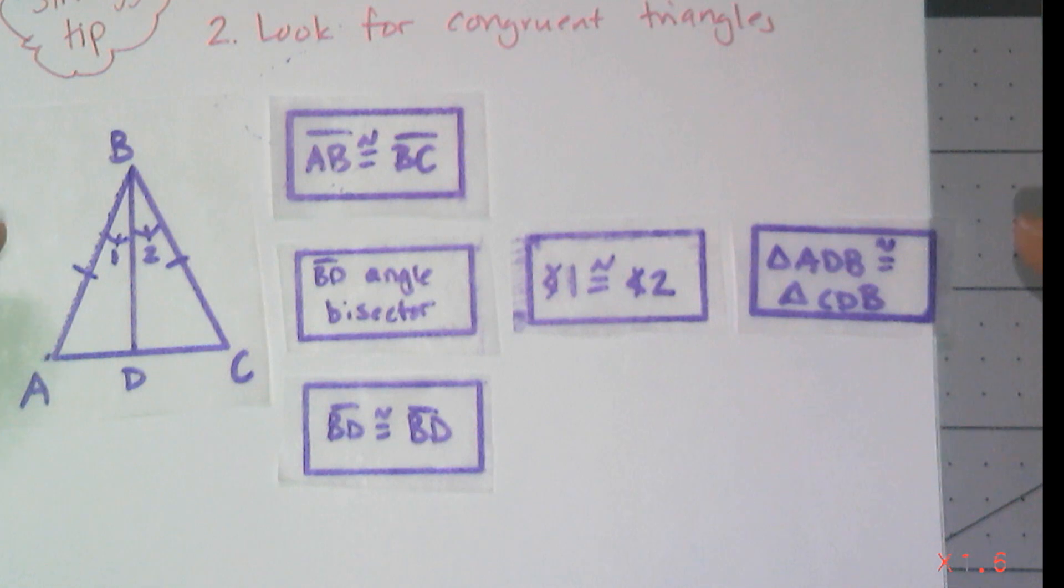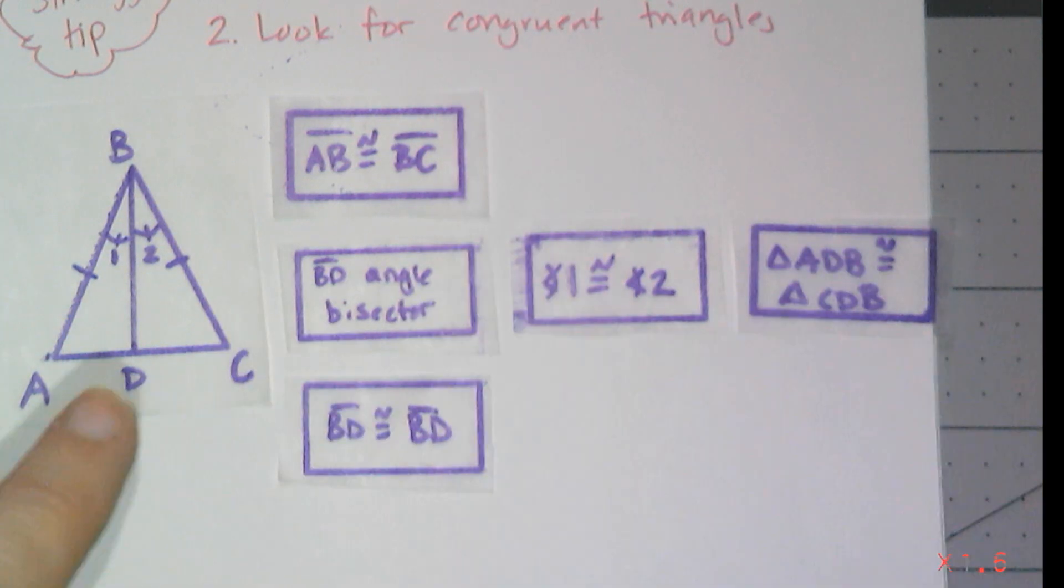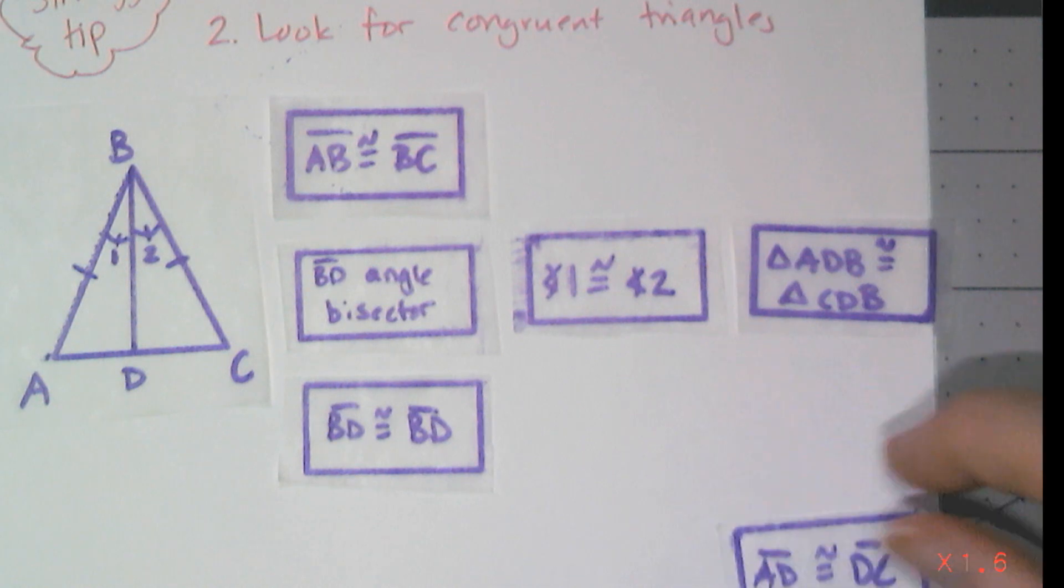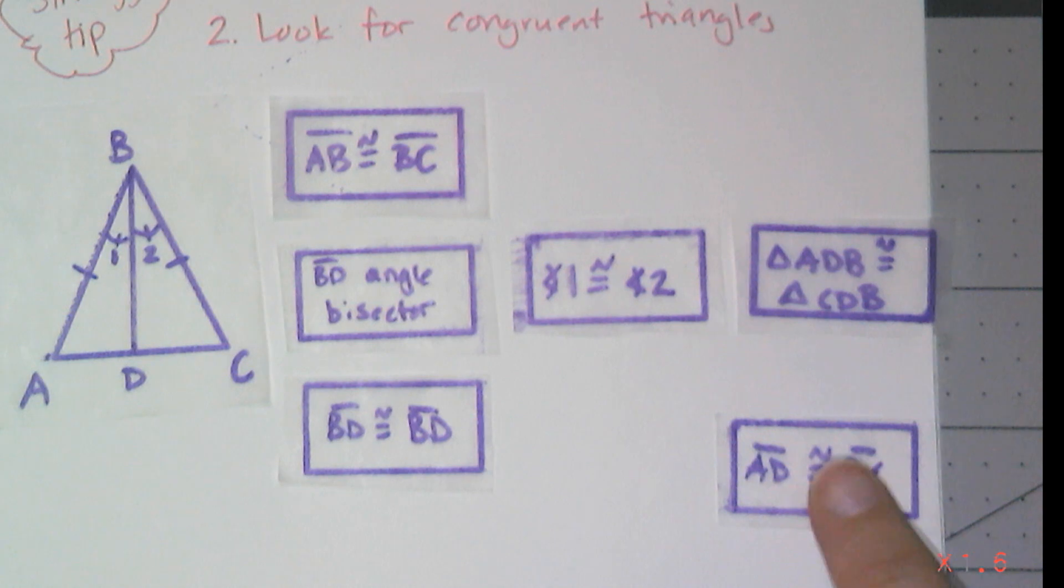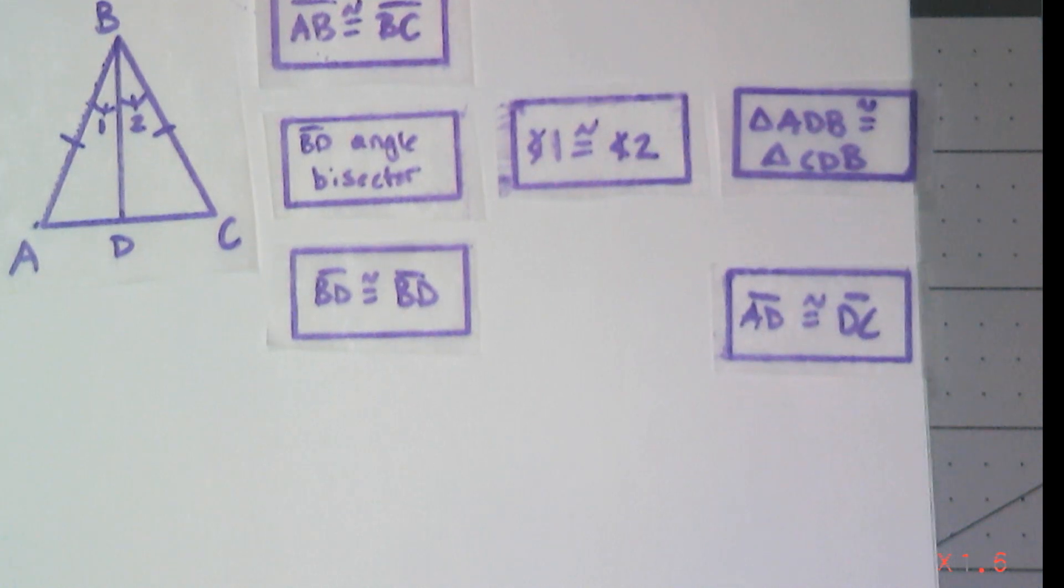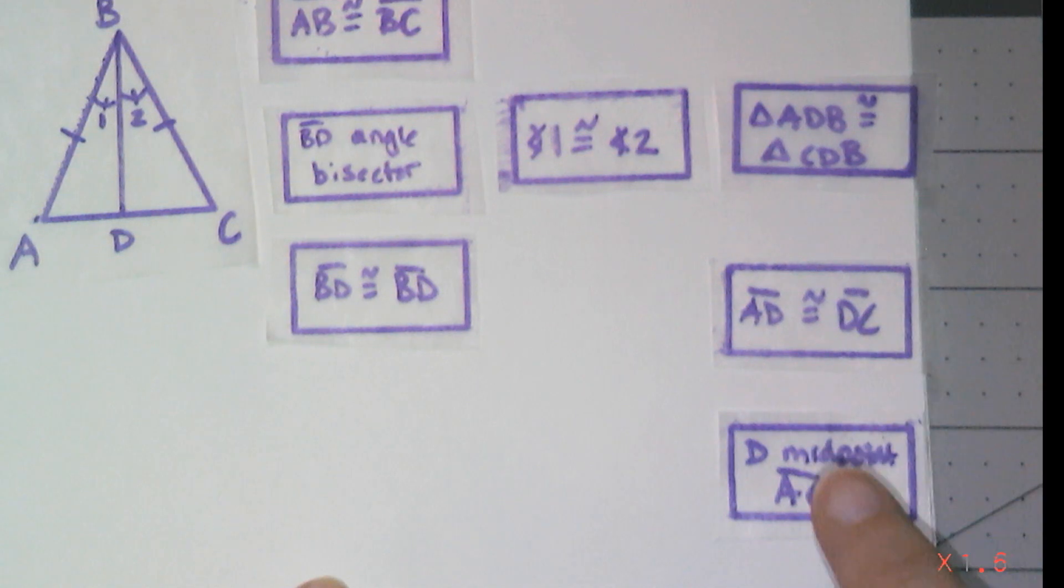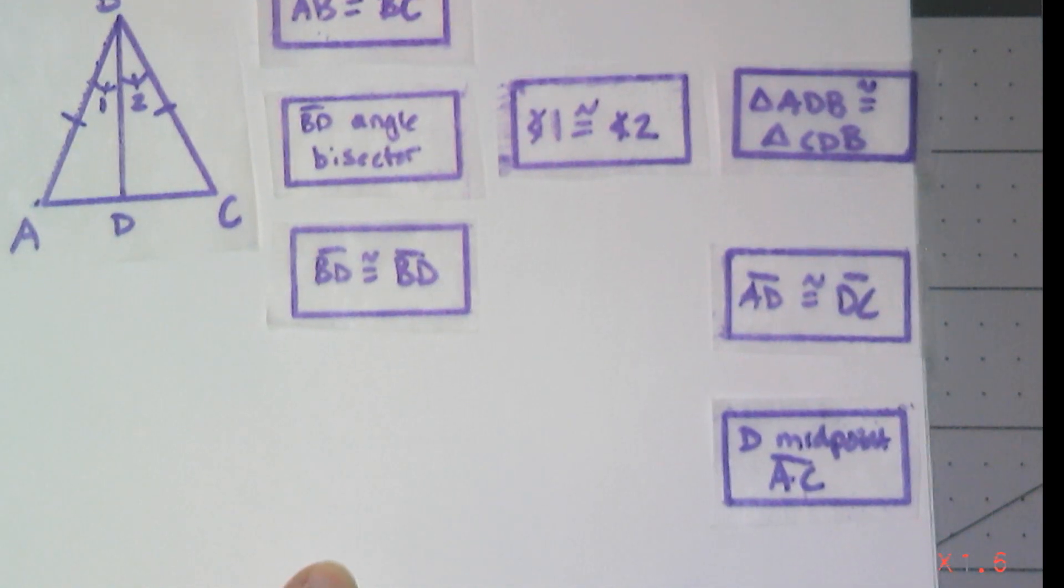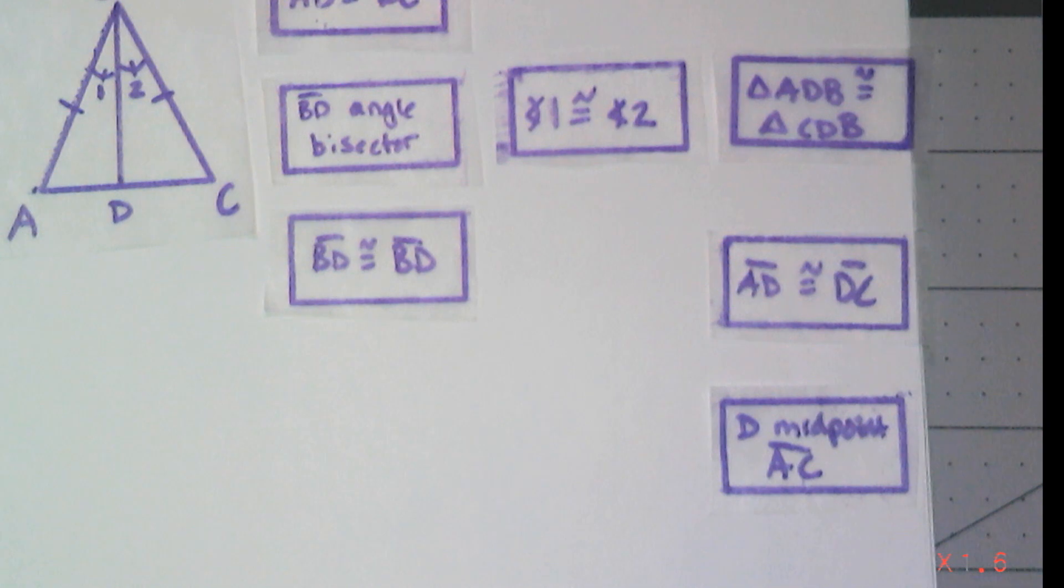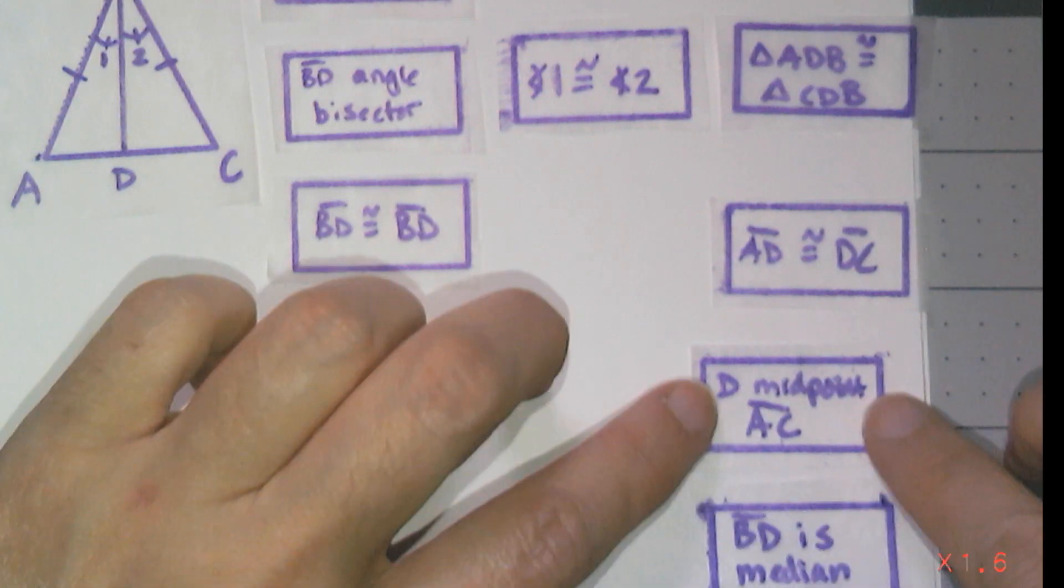And then from there, I have these triangles congruent. And so what I'm looking for, if I want BD to be a median, I need AD to equal DC. And I can get line segment AD congruent to line segment DC by corresponding parts of congruent triangles are congruent, CPCTC. And then I know if those two line segments are congruent, that D has to be the midpoint of AC. And if I know D is the midpoint of AC, then I know by definition that BD has to be the median.